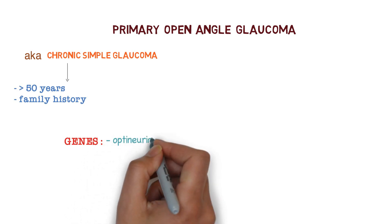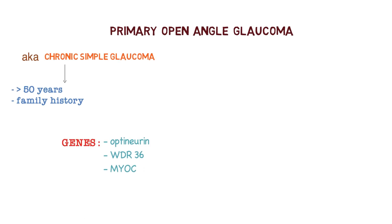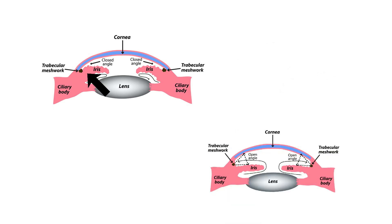In glaucoma, we know there is a rise in intraocular pressure. In our previous video, we discussed that in primary angle-closure glaucoma there is a relative pupillary block, the angle is narrow, and there is obstruction in the outflow of aqueous humor. But in primary open angle glaucoma, the angle is open, so the problem lies in the trabecular meshwork.